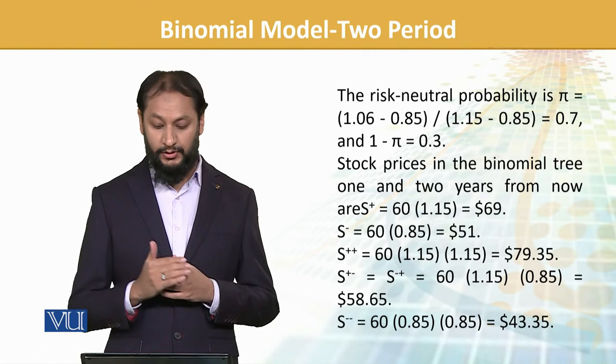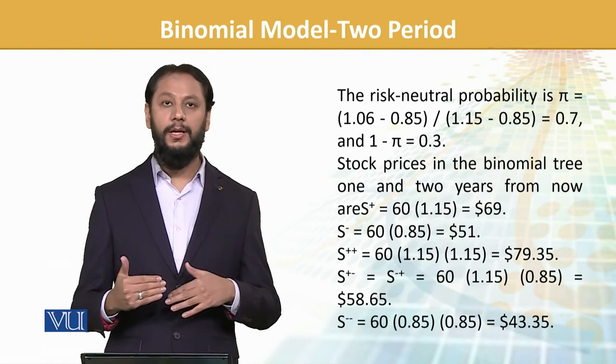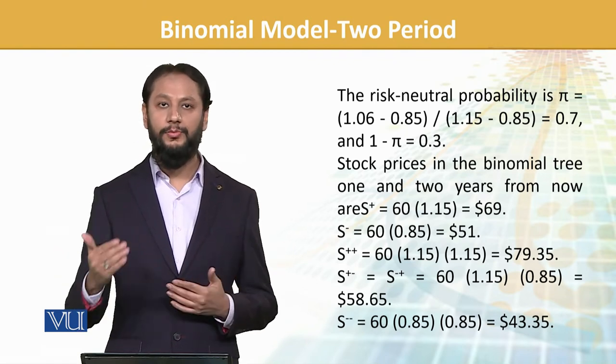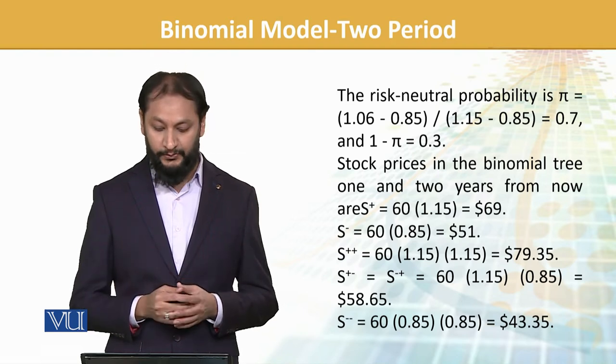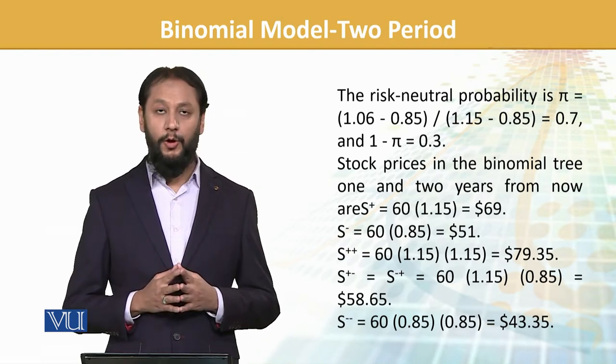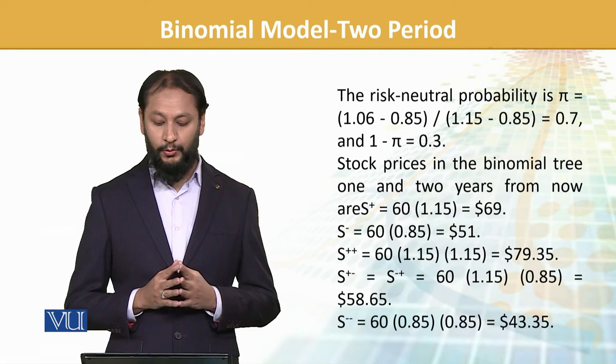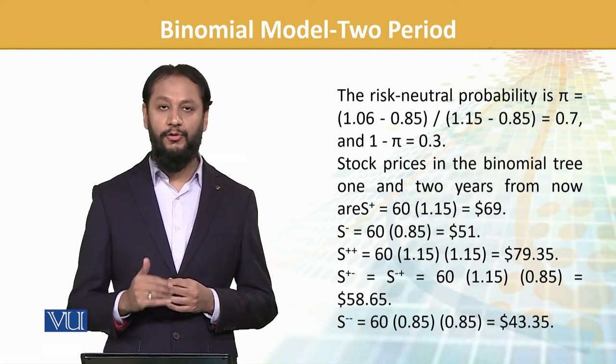So we have probability of 0.7. The second probability, since the sum equals 1, is 0.3. Stock prices in the binomial tree one and two years from now: from $60 it can go to $69 or down to $51.